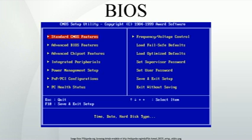Operating System Services: The BIOS ROM is customized to the particular manufacturer's hardware, allowing low-level services, such as reading a keystroke or writing a sector of data to diskette, to be provided in a standardized way to an operating system. For example, an IBM PC might have either a monochrome or a color display adapter using different display memory addresses and hardware, but a single BIOS system call may be invoked to display a character at a specified position on the screen in text mode. The BIOS provides a small library of basic input-output functions to operate peripherals, such as the keyboard, rudimentary text and graphics display functions, and so forth.